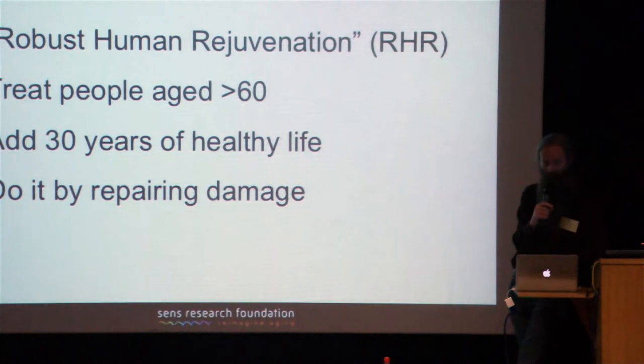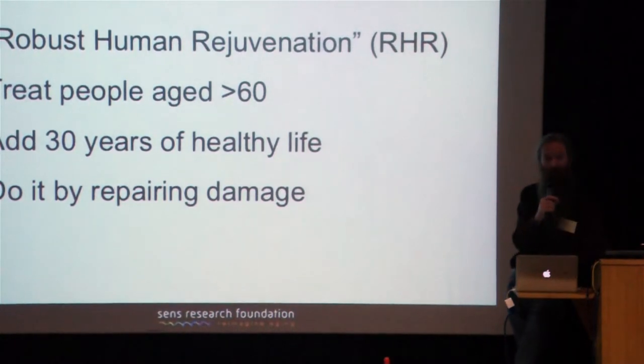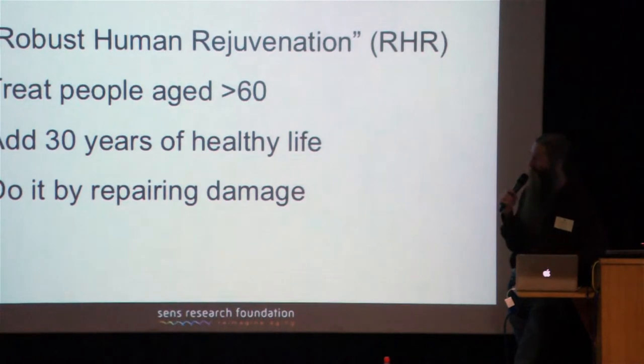And since it's being done by repairing damage, what that basically means is that these people will be rejuvenated somewhat, quite a lot actually, such that they won't be biologically 60 again until they are chronologically 90. That's the core goal of what we do. And it's a pretty ambitious goal, but we think we've got a respectable chance of doing it within the next 20 or 25 years, subject to funding.